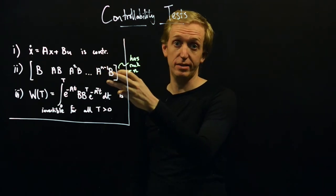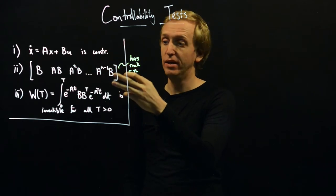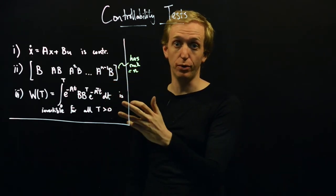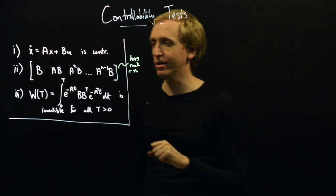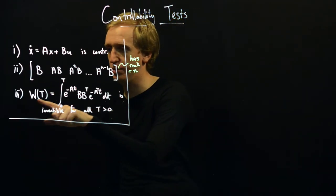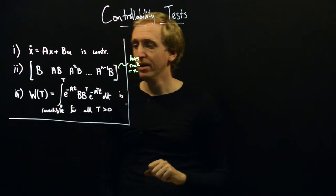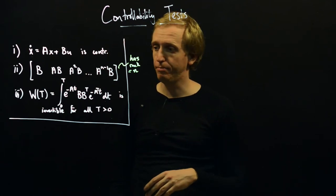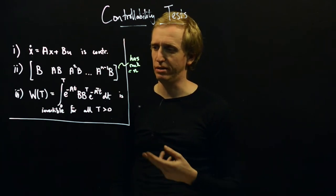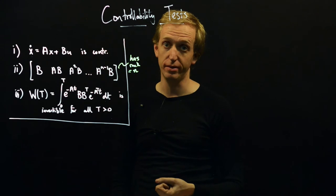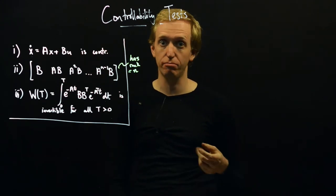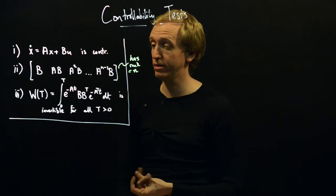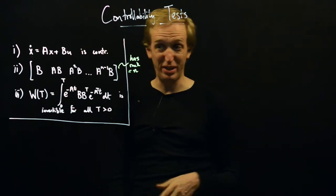We're also going to introduce a test involving the controllability Gramian, which is a fancy name for this thing called W of T. It's not a very practical test, but the controllability Gramian encodes extra information and gives insights about how easy or difficult it is to control a system.